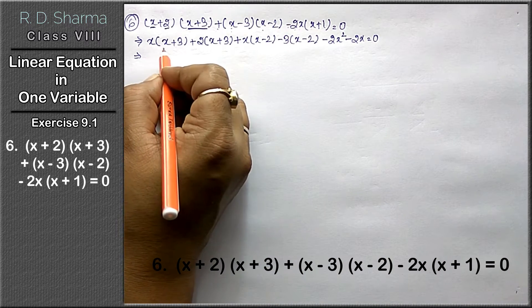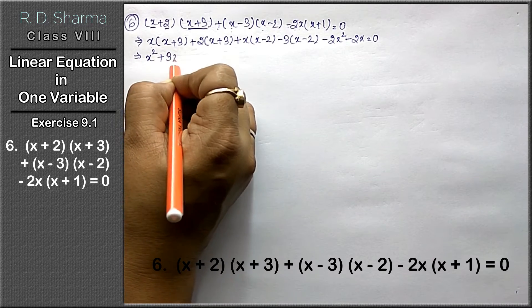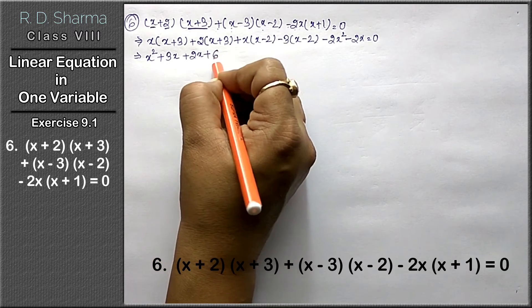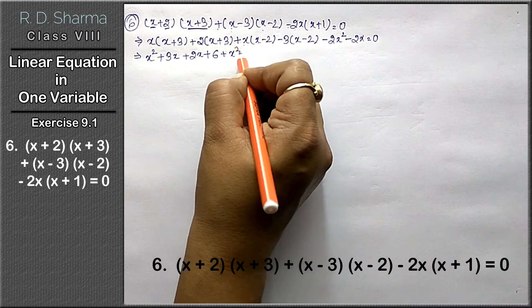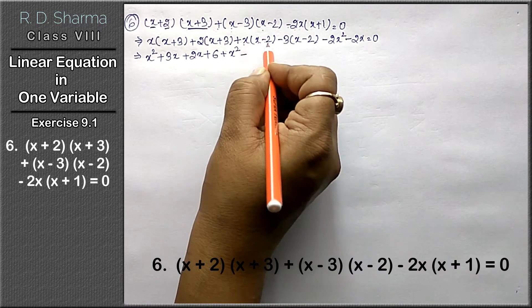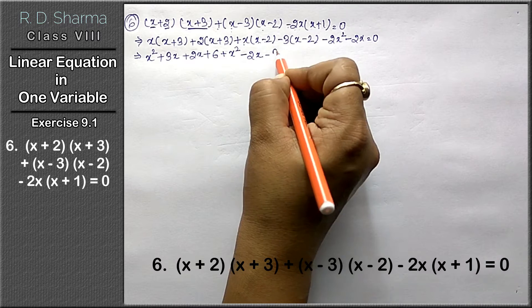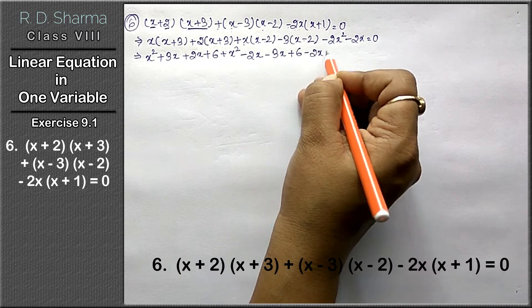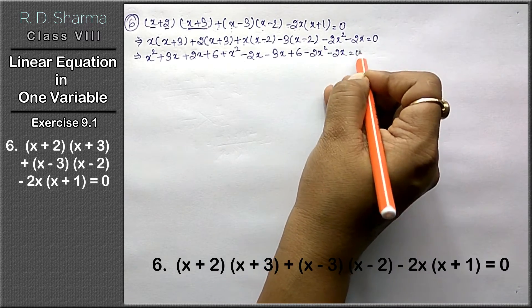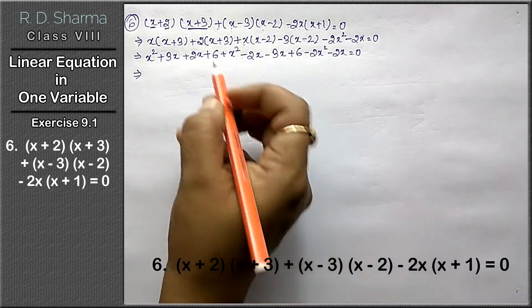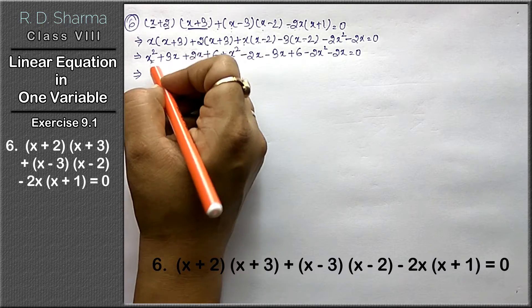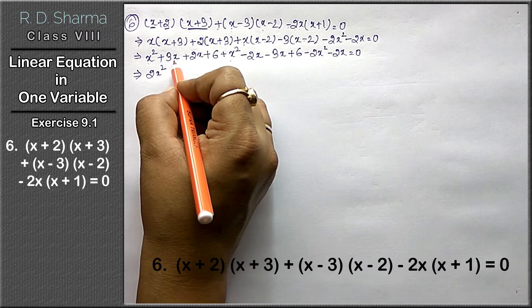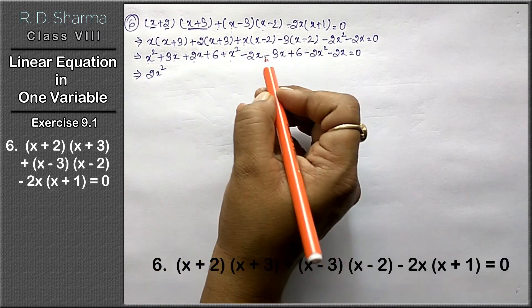Now x into x is x² plus 3x, plus 2 into x is 2x, plus 2 times 3 is 6, plus x into x is x² minus x into 2 is 2x, minus 3x minus minus becomes plus, 3 times 2 is 6, minus 2x² minus 2x equals to 0.